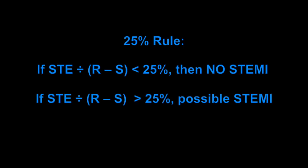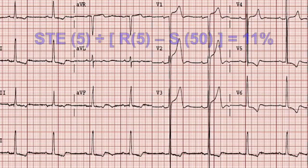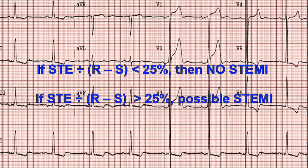Let's take a look at this EKG. There is an S wave in V1 plus the R wave in V5 that measures greater than 35 millimeters, so there is left ventricular hypertrophy. We can see some ST elevation in V2 and V3 that measures around five little boxes. The R wave in V2 or V3 is around five little boxes and the S wave is around 50. After doing all the math, it comes out to around 11%, so there is probably no STEMI in this EKG.